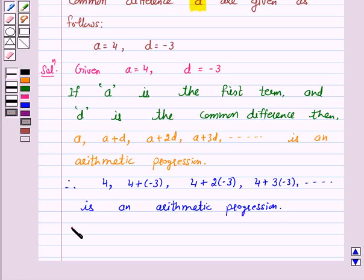Therefore, 4, 1, minus 2, minus 5 are the first four terms of the AP.